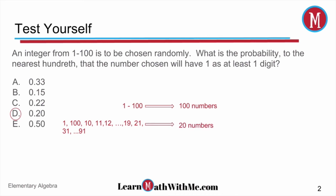And if you remember, when we've talked about percents being a part over the whole, we have 20 numbers over a total of 100 numbers in the set. That gives us 0.20 as our answer.